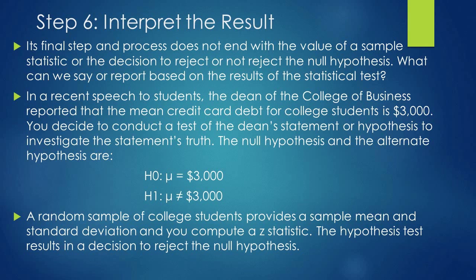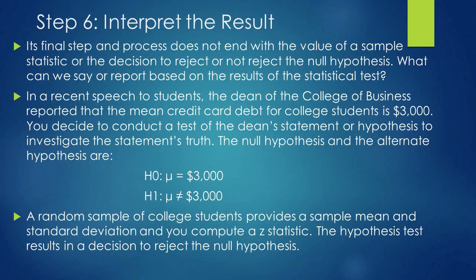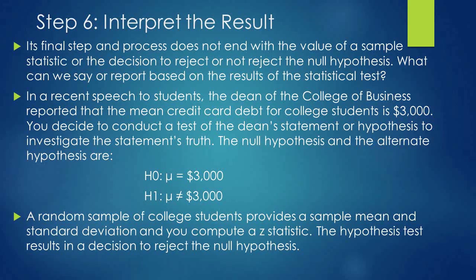Step 6 is to interpret the results. The process doesn't end with the value of the sample statistic or the decision to reject or not reject the null hypothesis. We must make a statement based on the sample data. For example, a dean reported that the mean credit card debt for college students is $3000. So our null hypothesis will be mu equals $3000, and our alternative hypothesis will be mu does not equal $3000.